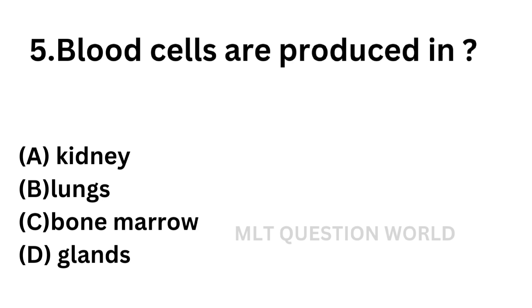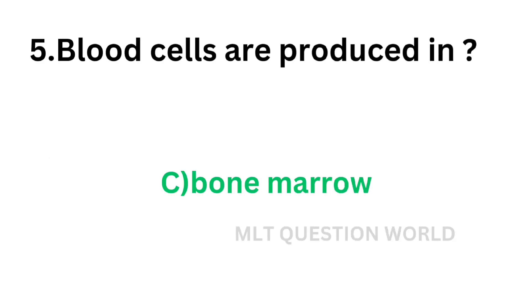Question number 5: Blood cells are produced in. Option A: Kidney. Option B: Lungs. Option C: Bone marrow. Option D: Glands. 95% of the formation of blood cells takes place in bone marrow, and the process is called hematopoiesis. The correct answer is option C: Bone marrow. Blood cells are produced in bone marrow.